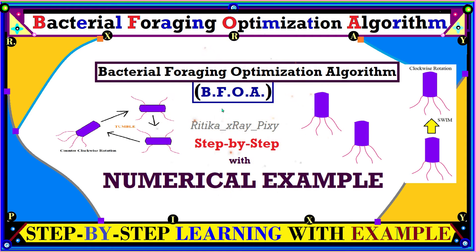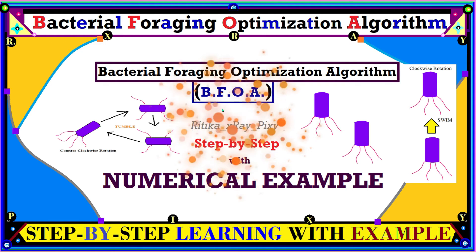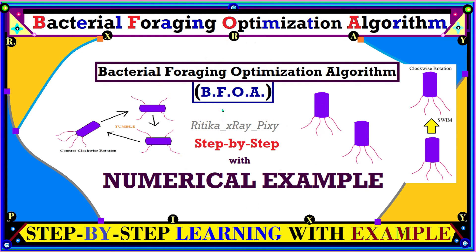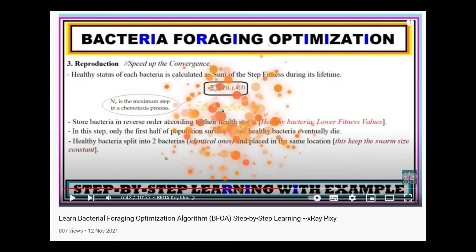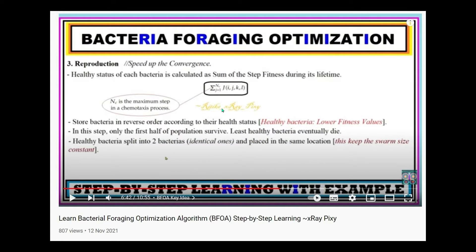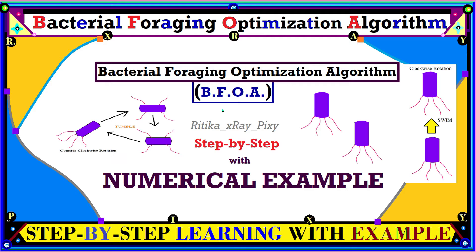This video is based on the Bacterial Foraging Optimization Algorithm. We will try to understand how this algorithm works step by step with a numerical example. Everything related to the theoretical background was already discussed in the previous video, where we covered what this algorithm is about, how it works, and the various mathematical models used. The link is given below in the description box.